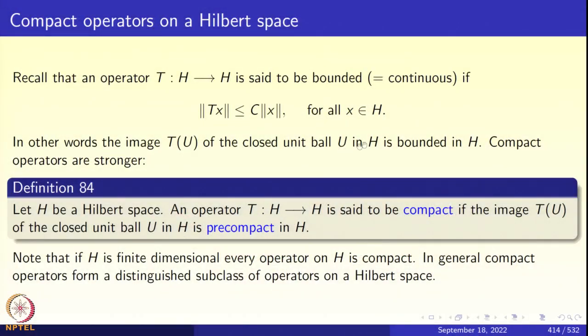We will discuss this basic and elementary version of the spectral theorem, proceeding along predictable lines. We have seen the classical approach in chapters 5 and 6 to Sturm-Liouville problems; now we look at the same problem in a functional analytic setting. Recall that an operator T from H to H is said to be a bounded operator if norm T(x) is less than or equal to C times norm x for all x in H — the image of the unit ball is bounded in H.